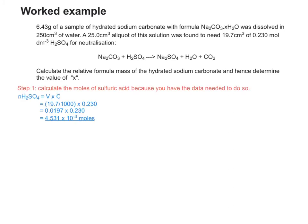What I've done is I've divided 19.7 cm3 by 1000 to convert into decimetres cubed, then timesed it by 0.230, which is my concentration, which gives me 4.531 times 10 to the minus 3 moles. Notice how I've underlined the final answer in that step, so the examiner knows exactly which bit to look at and which bit to credit. The little n before H2SO4 just stands for the number of moles of H2SO4. It's just a common convention that we use.